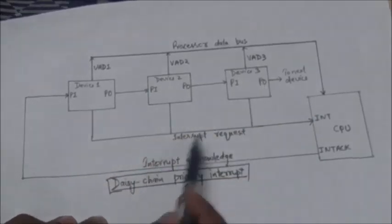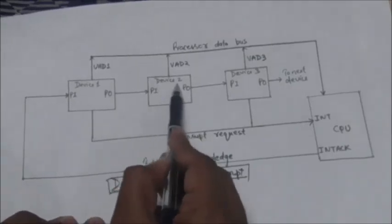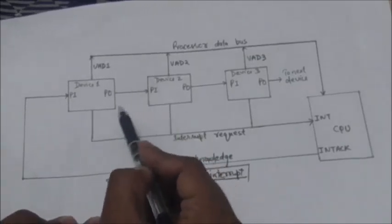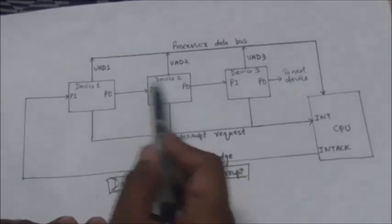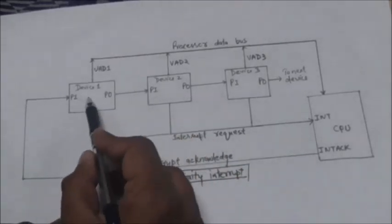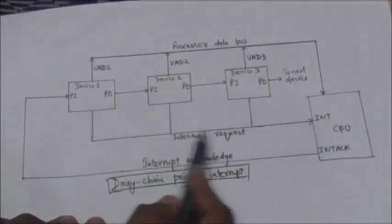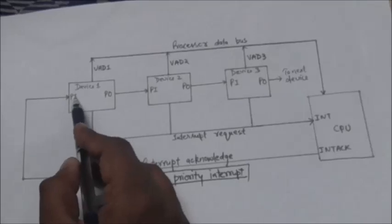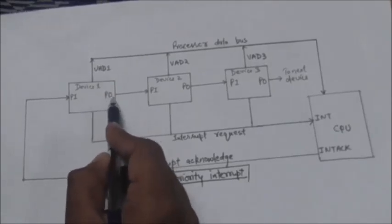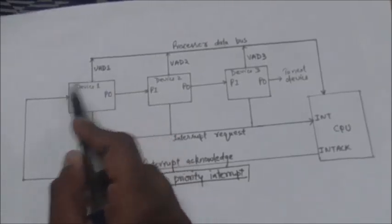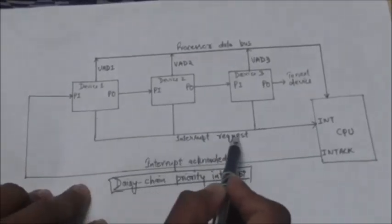In daisy chaining, all the devices are connected serially. The device at the first position has the highest priority, the device at the second position has the second highest priority, and the device at the last position has the lowest priority. See this diagram — the devices are connected serially, and each device has a Priority In (PI) input and a Priority Out (PO) output.